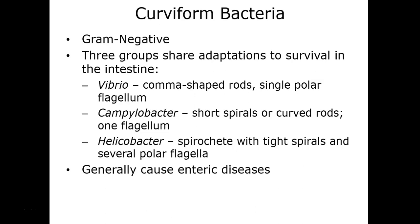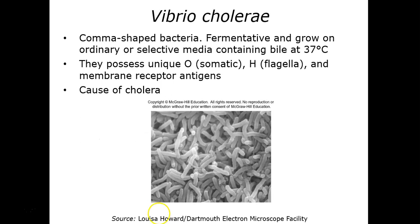The curved or vibrioid bacteria are gram-negative and fall into three basic groups: Vibrio, Campylobacter, and Helicobacter. All three members have the ability to survive and pass through the intestinal tract.